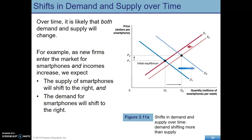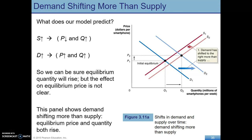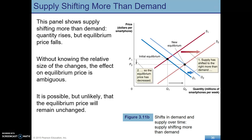Over time, we could see shifts in both supply and demand. If they both move to the right, we know definitely that the quantity will increase because supply and demand are moving in the same direction. What we don't know is what's going to happen to price — it could stay the same, rise, or fall. If demand shifts more than supply, price will rise. But if supply shifts more than demand, price will fall.